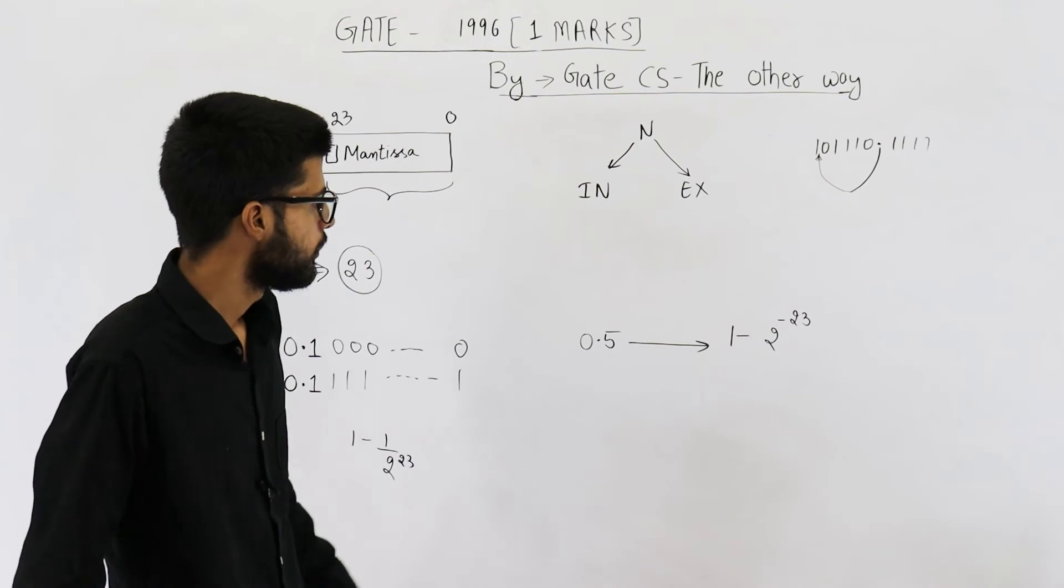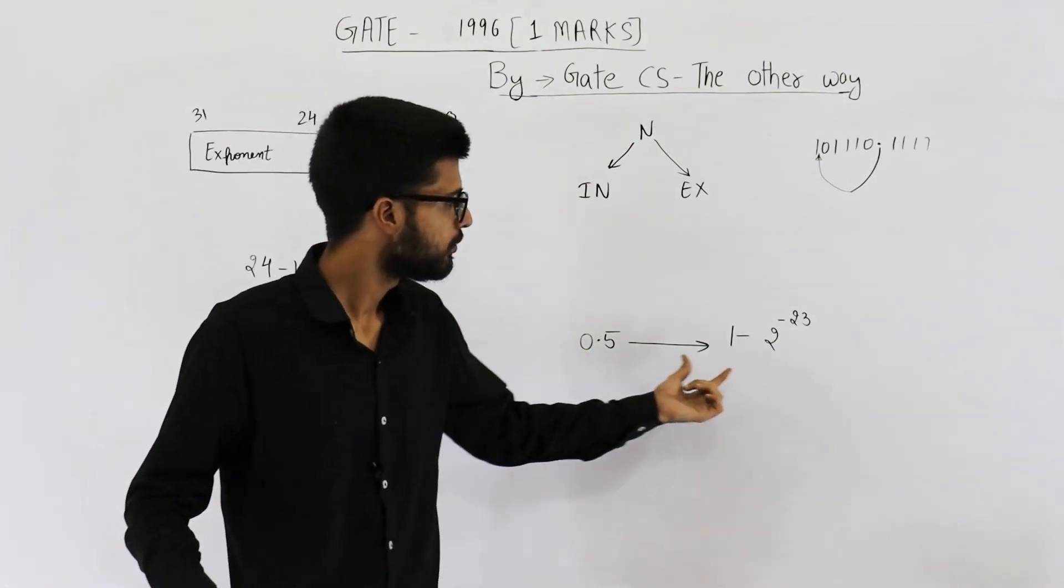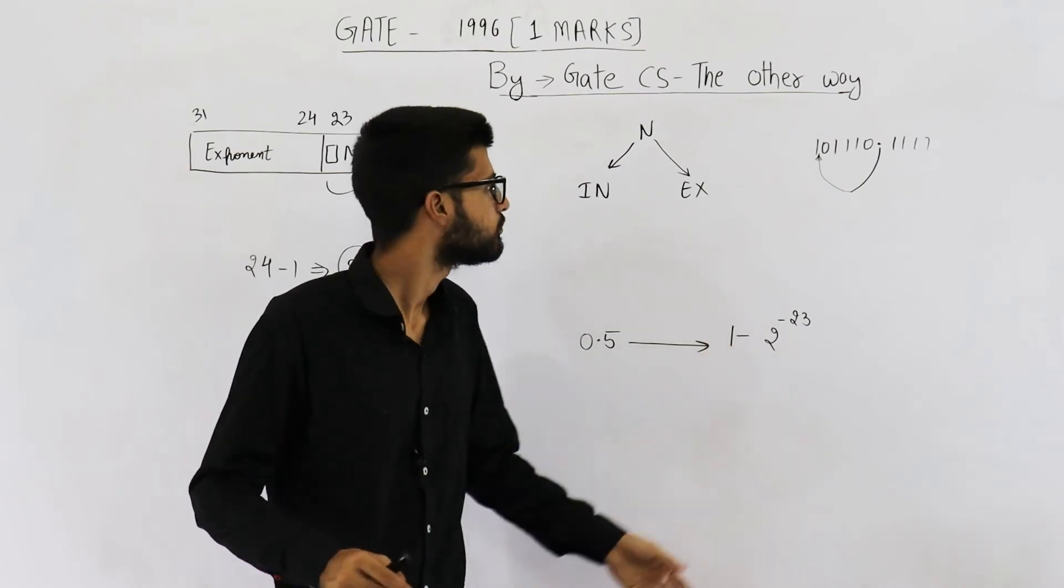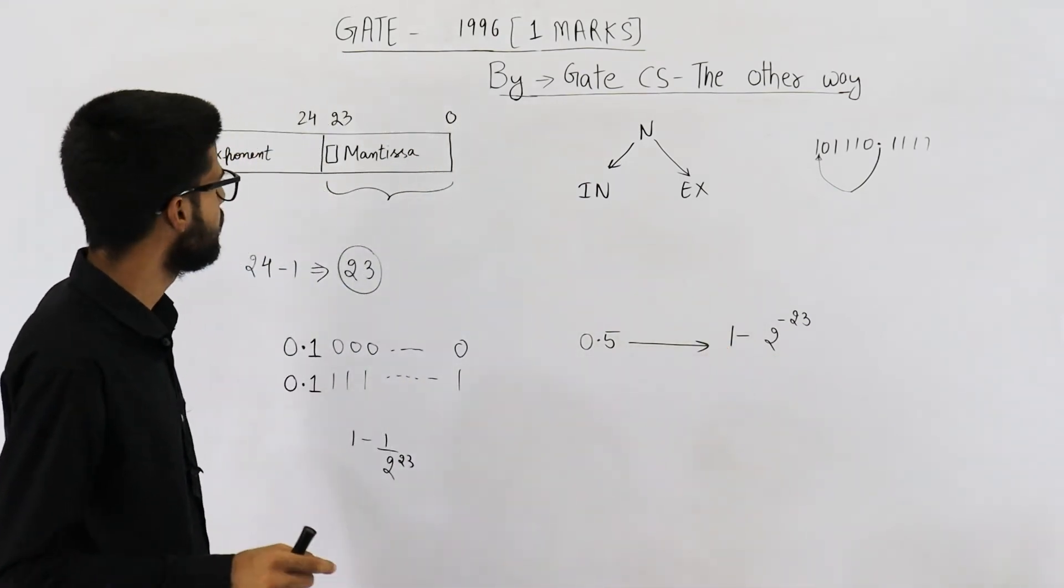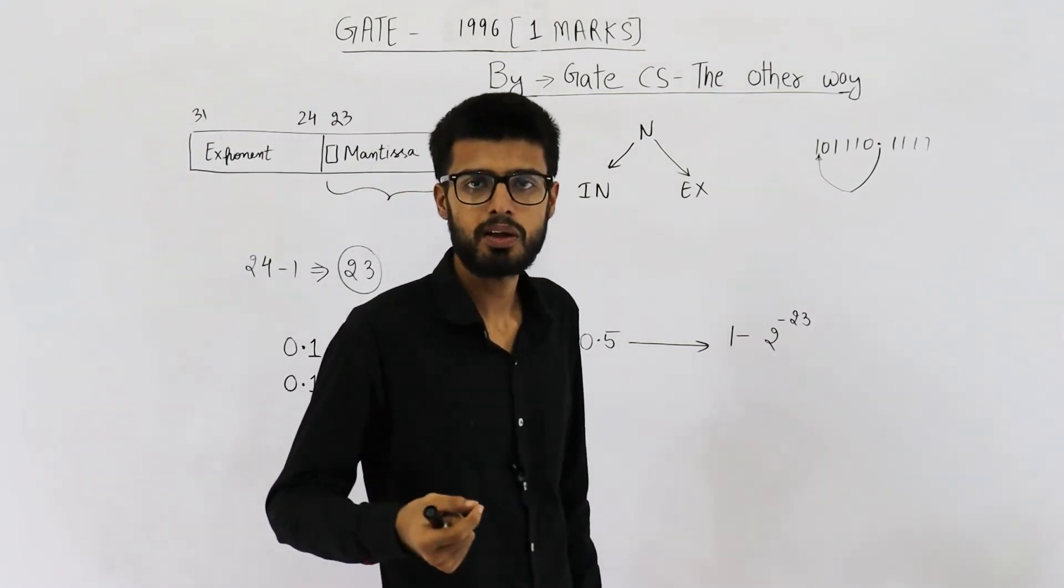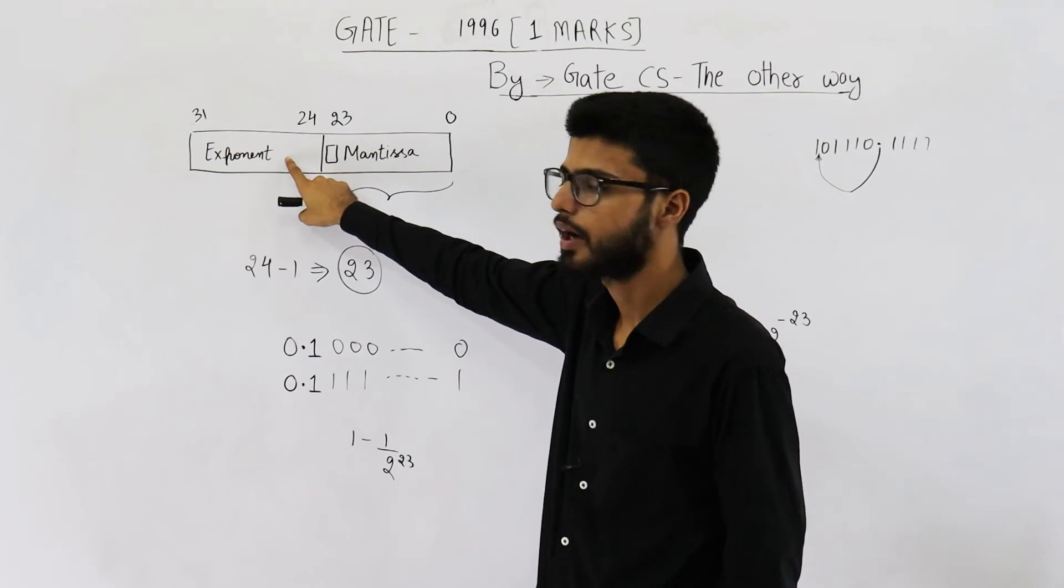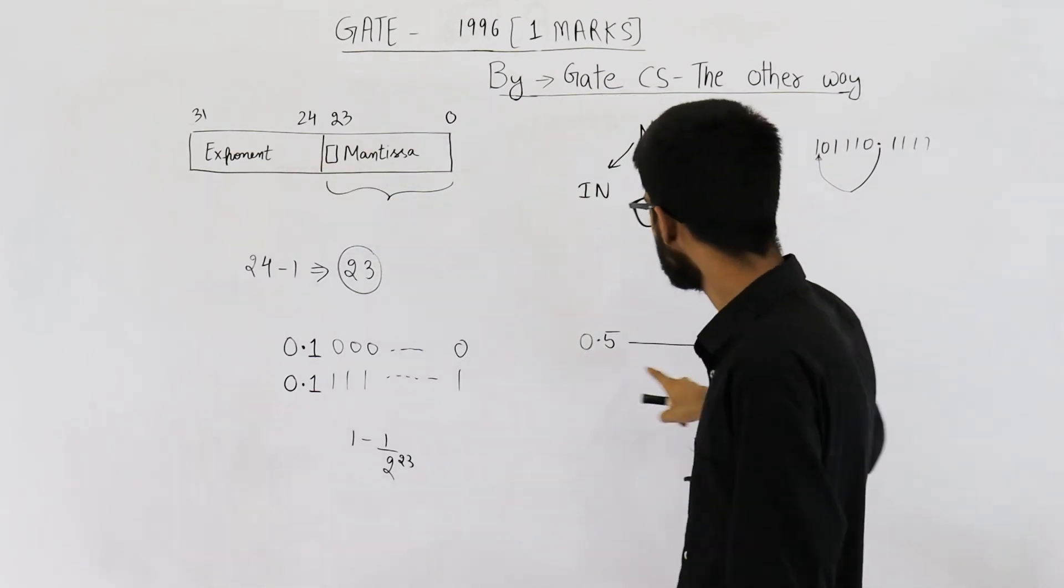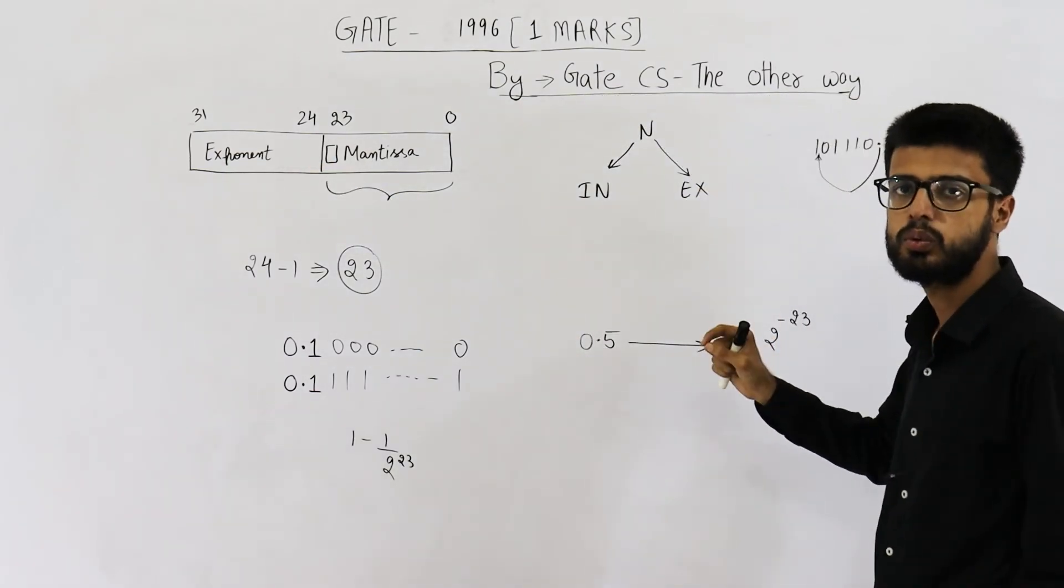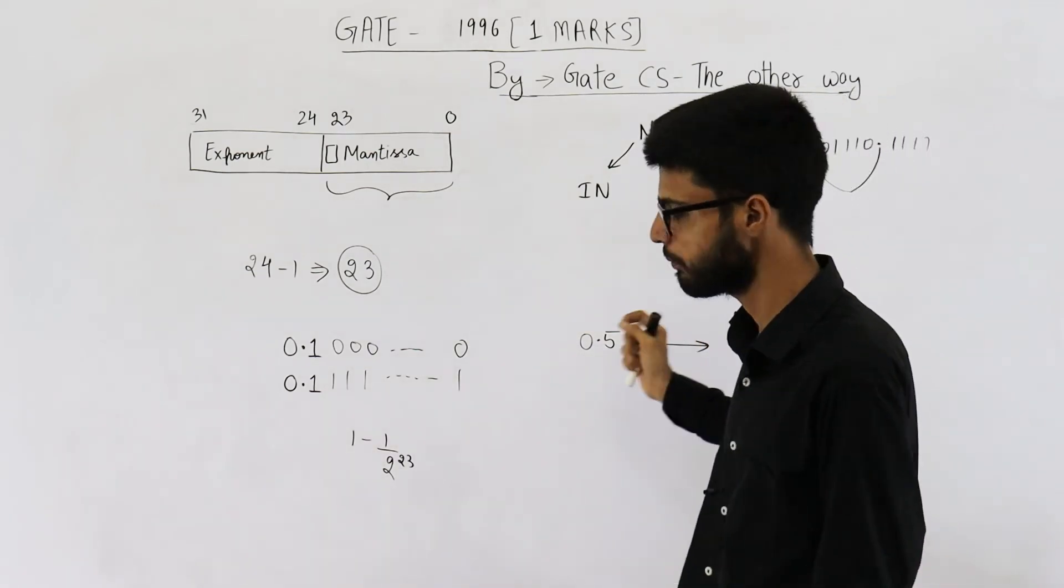Now, see, the range is very small. It is from 0.5 to something less than 1. That means, some of you might think that we can represent very small numbers using this range only. Actually, we are not considering exponent yet. Multiplying this range into 2 raised to the power exponent will just increase it. So, keep that thing in mind.